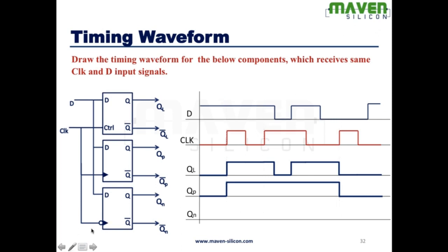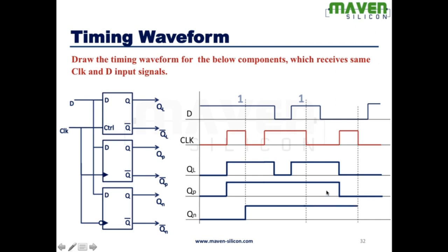When it comes to the negative-edge flip-flop, you have to consider the negative edge. Look at the lines — I'm going to consider this negative edge, this one, and this one. Q is zero at first. Considering the negative edge, Q becomes one and remains the same till the next edge. At this negative edge, D is high again, so Q remains high. At the next negative edge, D is low, so Q becomes low.